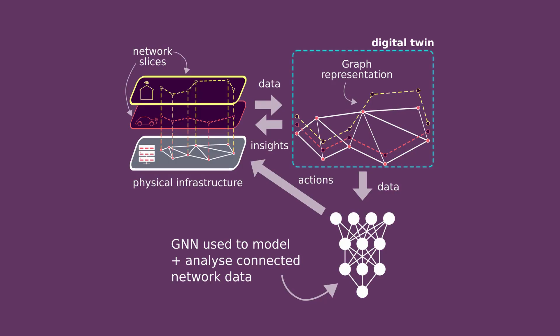A digital twin of the entire telecommunication network would be far too complex. So instead, it's more practical that the network will be made of smaller digital twins for different components that all connect together. Our work here is focused on the digital twin for network slicing, which can be used to make connections more effective across the whole network end-to-end, and make management of network slices more intelligent and cost effective.